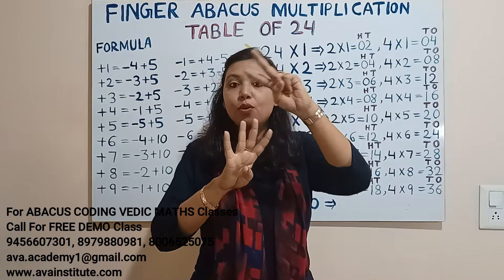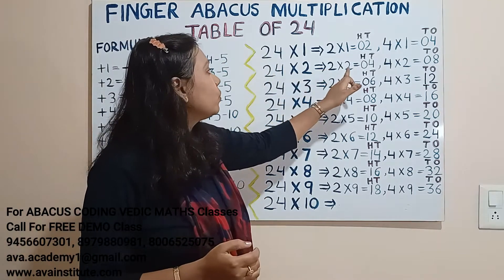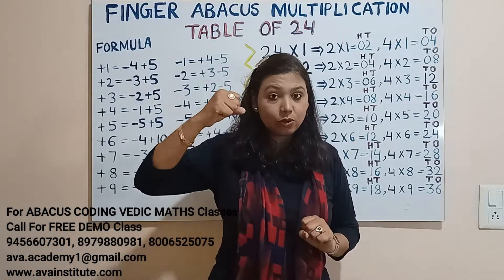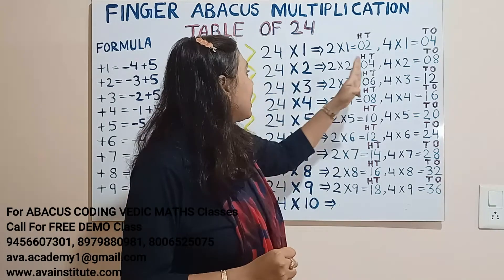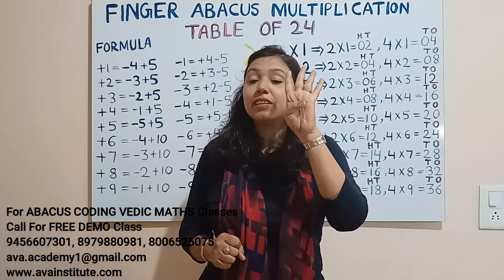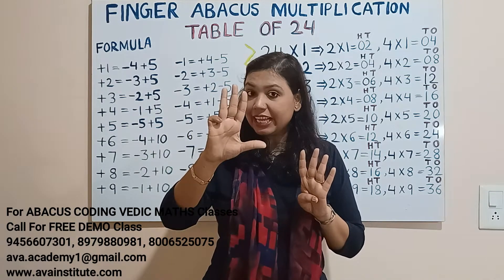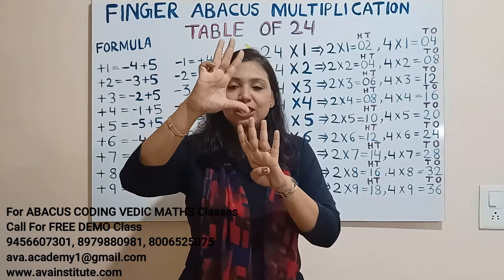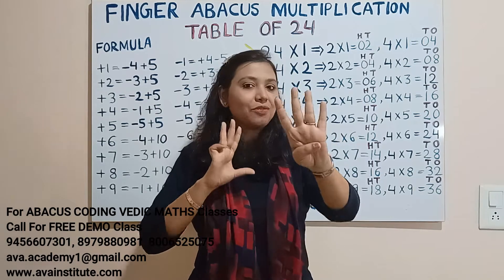Next, 24 twos are: 2 twos are 4 — in hundreds 0, in tens 4. In hundreds 0, in tens 4. Now 4 twos are 8 — in tens 0, in ones 8. In tens we represent nothing and in ones place we represent 8. So what is the answer? 48 — that is 40 plus 8, so 48.